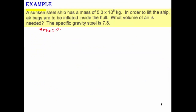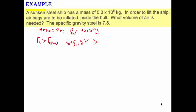In this problem, we are given the mass of a sunken ship as 5 times 10 to the power 5 kilogram, and we are asked for the volume of airbags needed to be inflated inside the hull to lift it up. The ship is made of steel with a specific gravity of 7.8, so the density of steel is 7.8 times 1000, yielding 7.8 times 10 to the power 3 kilogram per cubic meter. For the ship to be lifted, the buoyant force — density of water times g times volume displaced — must be greater than the weight of the ship.